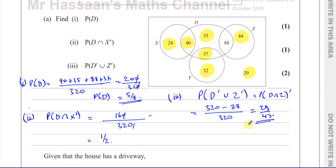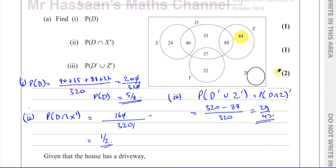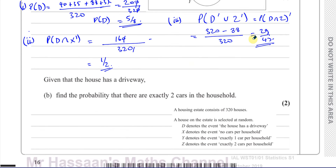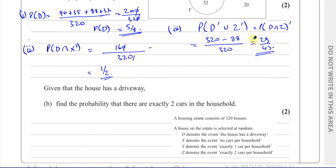So those are our three answers for part A. Now for part B, it says: given that the house has a driveway, find the probability that there are exactly two cars in their household.